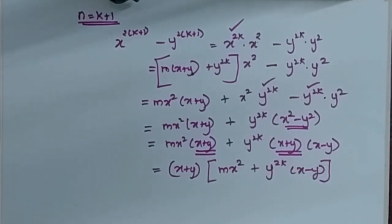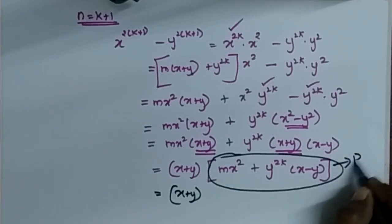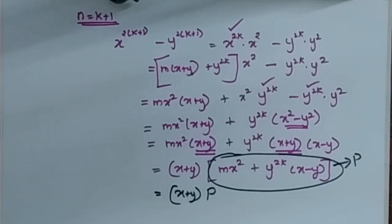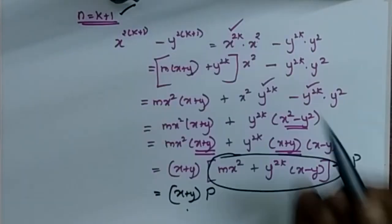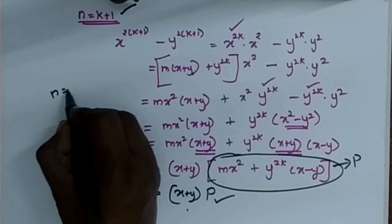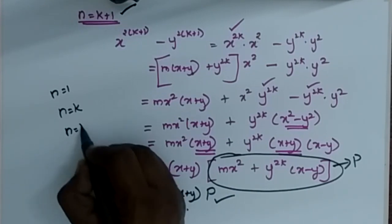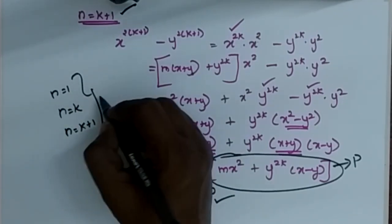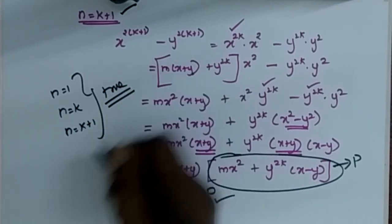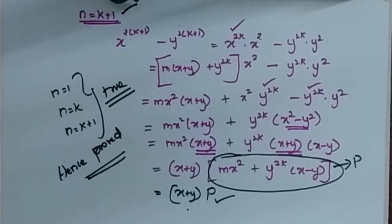So now what I have proved is that when N is K plus 1, the expression is some multiple of X plus Y. I have proved for N equal to 1, I have proved for N equal to K, and I have proved for N equal to K plus 1, that it is a multiple of X plus Y. Hence, we have reached a proof that this is true for all N belonging to the natural numbers.